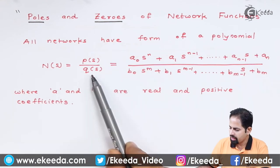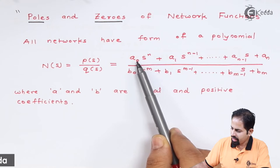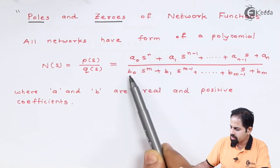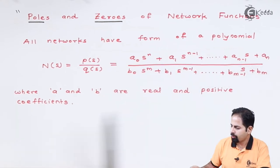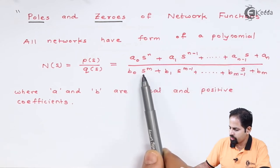See it has been written like this: a₀ into s raised to n and here it is b₀ into s raised to m, and up to the constant term the order of s is going to decrease. Here also it is going to decrease.